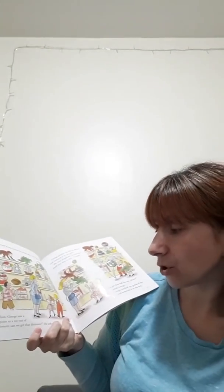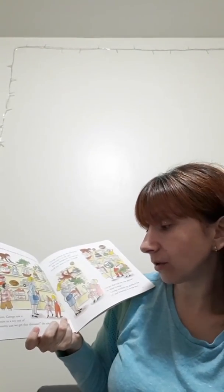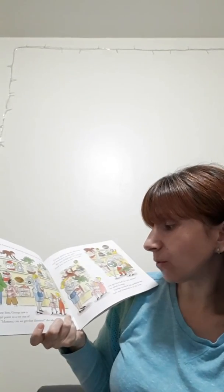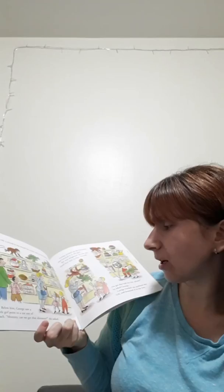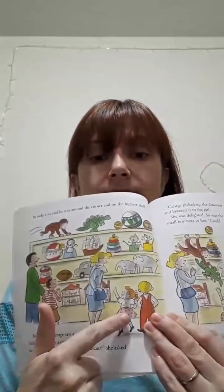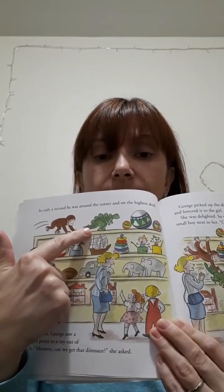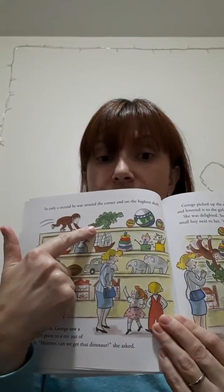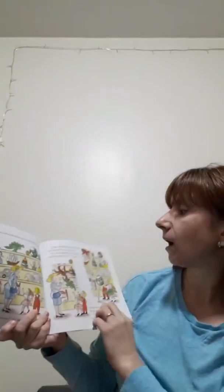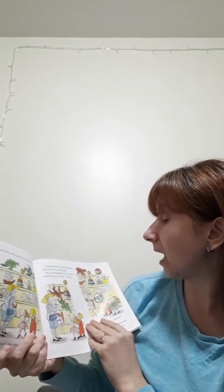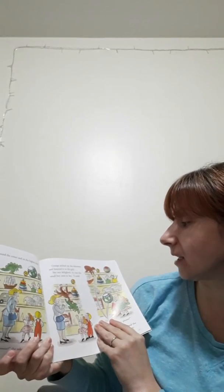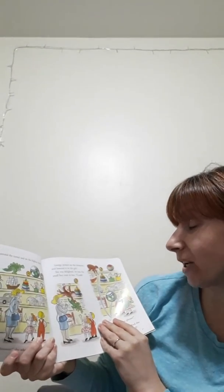Below him, George saw a little girl point to a toy out of reach. Mommy, can we get the dinosaur, she asked. So, this girl wanted the dinosaur. The dinosaur was too high to reach, even for her mommy. George picked up the dinosaur and lowered it to the girl. She was delighted. So was the small boy next to her.